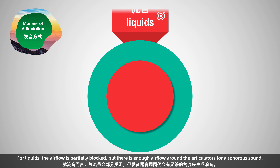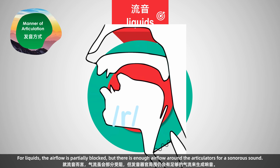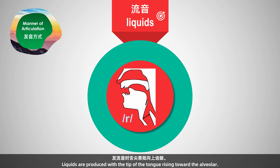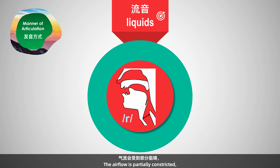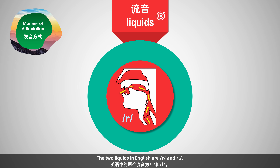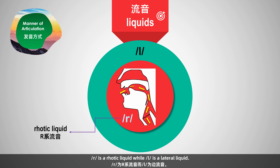For liquids, airflow is partially blocked, but there is enough airflow around the articulators for a sonorous sound. 发流音时，舌尖须抵向上齿龈，气流会受到部分阻碍，但仍有足够的气流在震动声带后从发音器官所形成的空隙间流出。The two liquids in English are /r/ and /l/.